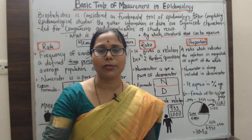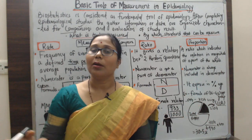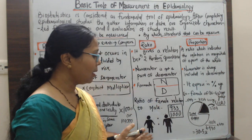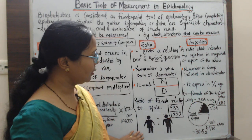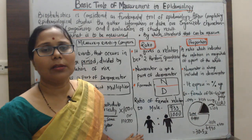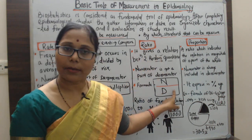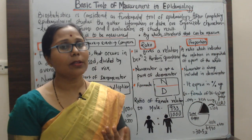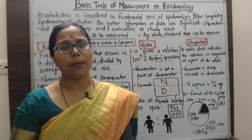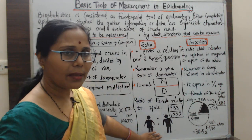For example, the female-to-male ratio: if there are 933 females to 1,000 males, that is 933 to 1,000. Another example: if in a population of 1,000 there are 2 doctors, then the ratio is 2 to 1,000. The ratio is always a fractional number, and the numerator is not part of the denominator — female and male are separate genders; doctors and population are separate categories.